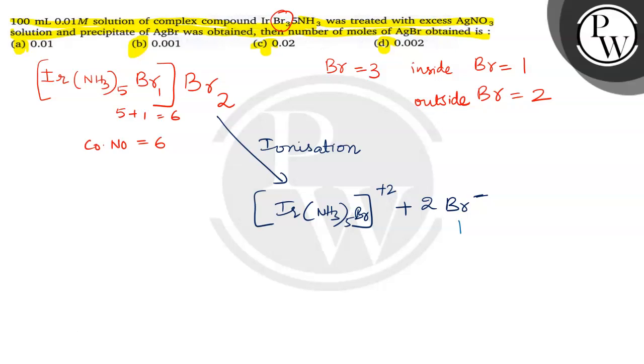So this Br⁻, which are now combines with AgNO₃ solution, that too in the same question given excess of AgNO₃. Now what is happening, this Ag combines with this Br, forms AgBr. As Br⁻ ions are 2, we are getting 2 moles of AgBr formed.